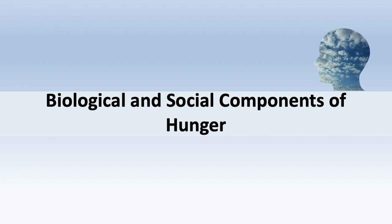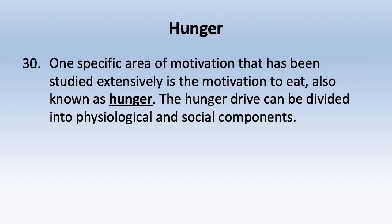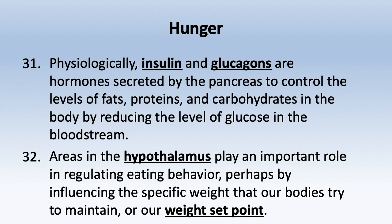We've discussed psychological needs, but there are also basic physical needs — one of which is hunger. The motivation to eat has been studied extensively. The hunger drive can be divided into physiological and social components. Physiologically, insulin and glucagon are hormones secreted by the pancreas to control levels of fats, proteins, and carbohydrates. Areas in the hypothalamus play an important role in regulating eating behavior and the weight set point.